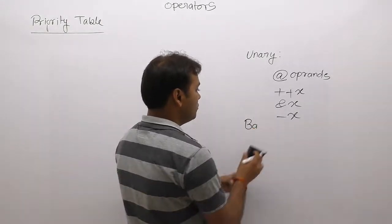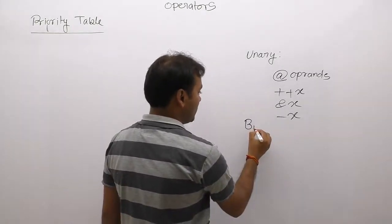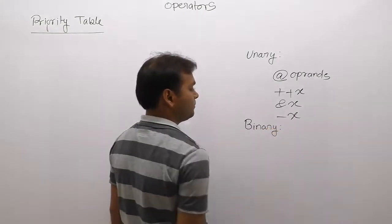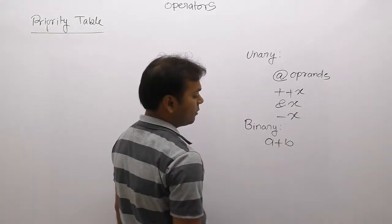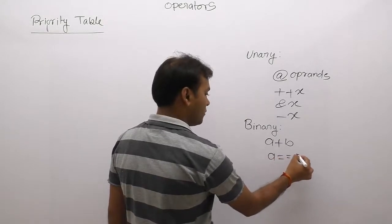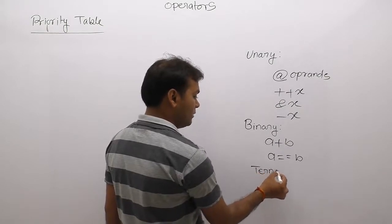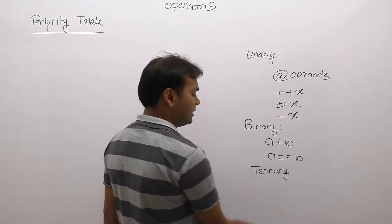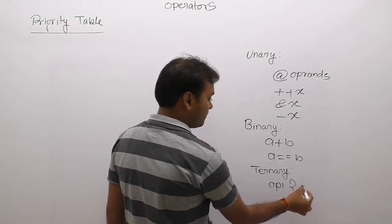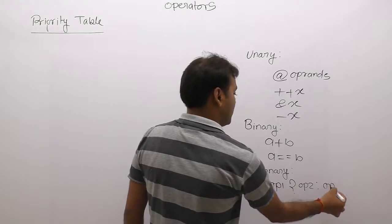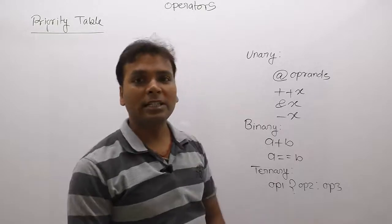Next, binary operator: if any operator requires two operands, then it is known as a binary operator. Like a + b — here + is the operator and a and b are the operands. Similarly a == b and so on. Ternary operator: if any operator requires three operands, it is known as a ternary operator — like operand1 ? operand2 : operand3. This is also known as the conditional operator.